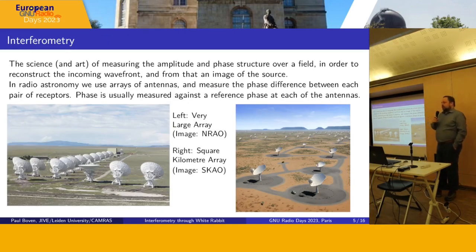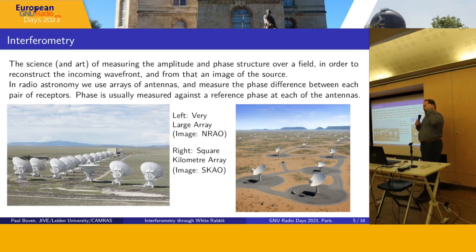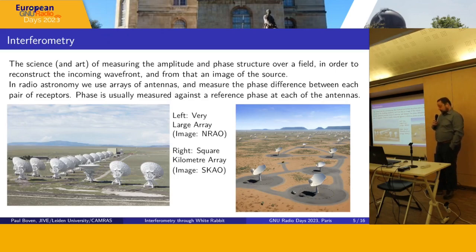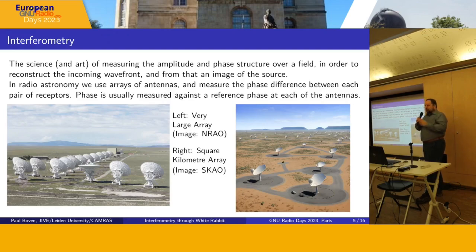Interferometry is where you use many receptor stations — antennas, dishes — to measure how the phase and amplitude varies as a signal comes in. By measuring these, you can try to reconstruct the image of the source you're looking for. Examples of interferometric arrays include the Very Large Array on the left and the SKA array on the right, which is currently still under construction. The SKA will actually use White Rabbit for distribution of the 1 PPS signal.